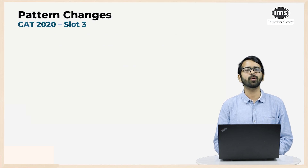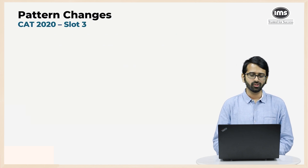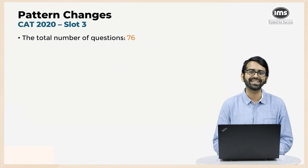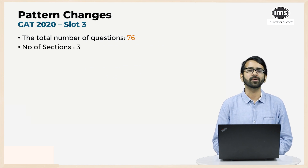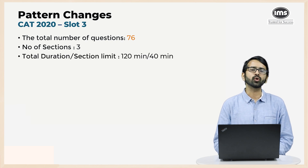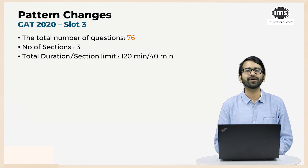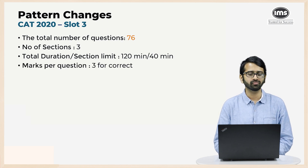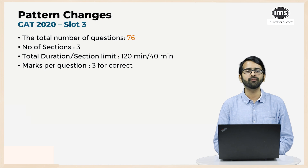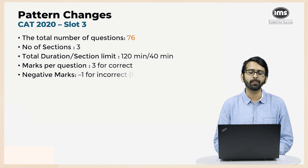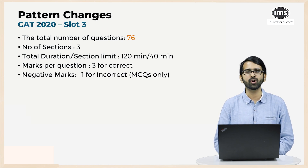First, we'll talk about the pattern of the paper. Overall, the number of questions was 76. The number of sections were 3, as it has been the last few years. The total duration of the exam was 120 minutes with each section being 40 minutes long. The marks per question were 3 for any correct answer, and there was a negative marking of 1 mark for incorrect answers in MCQ questions. TITA questions did not have any negative marking.